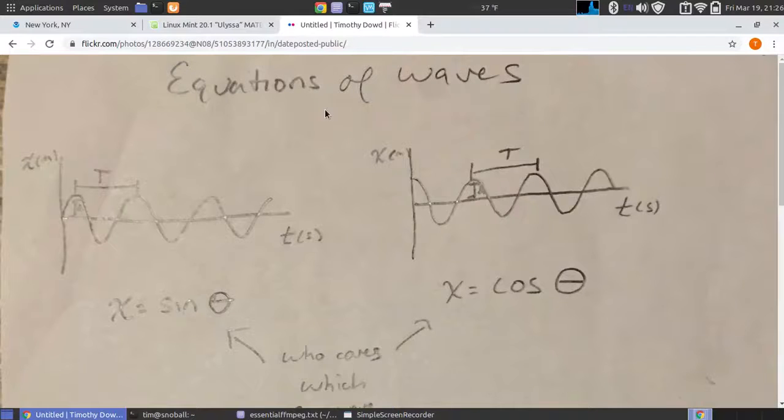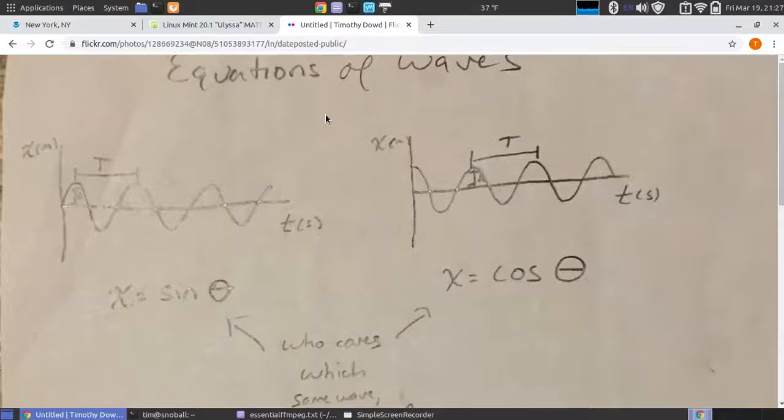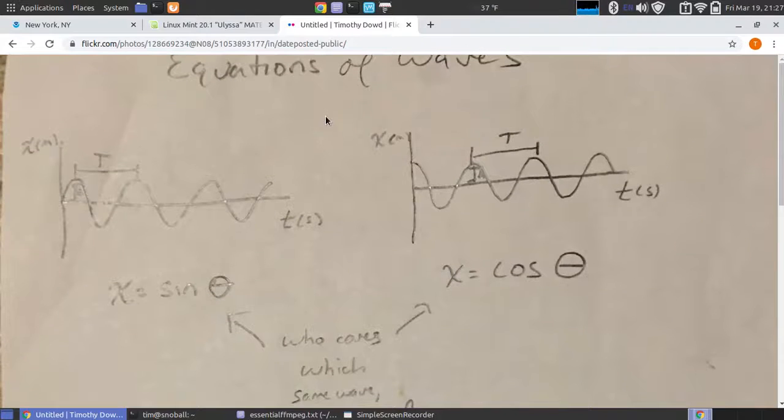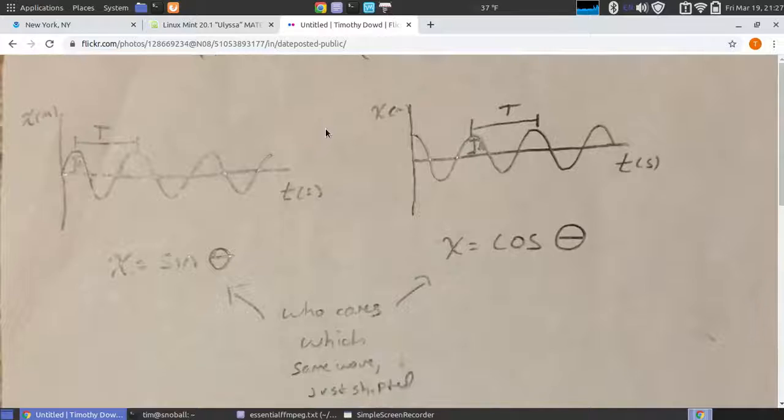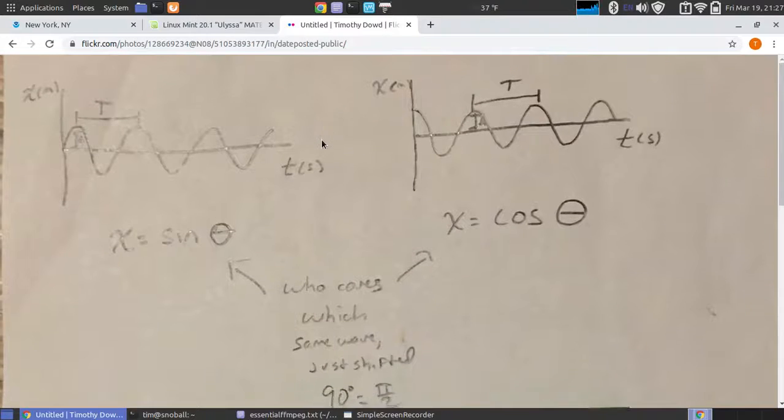These graphs describe a particle as it encounters a wave, moving in simple harmonic motion. That's why I've used sinusoidal functions. Notice I've drawn one sine curve and one cosine curve and written 'who cares which' - they're really the same wave just shifted 90 degrees.